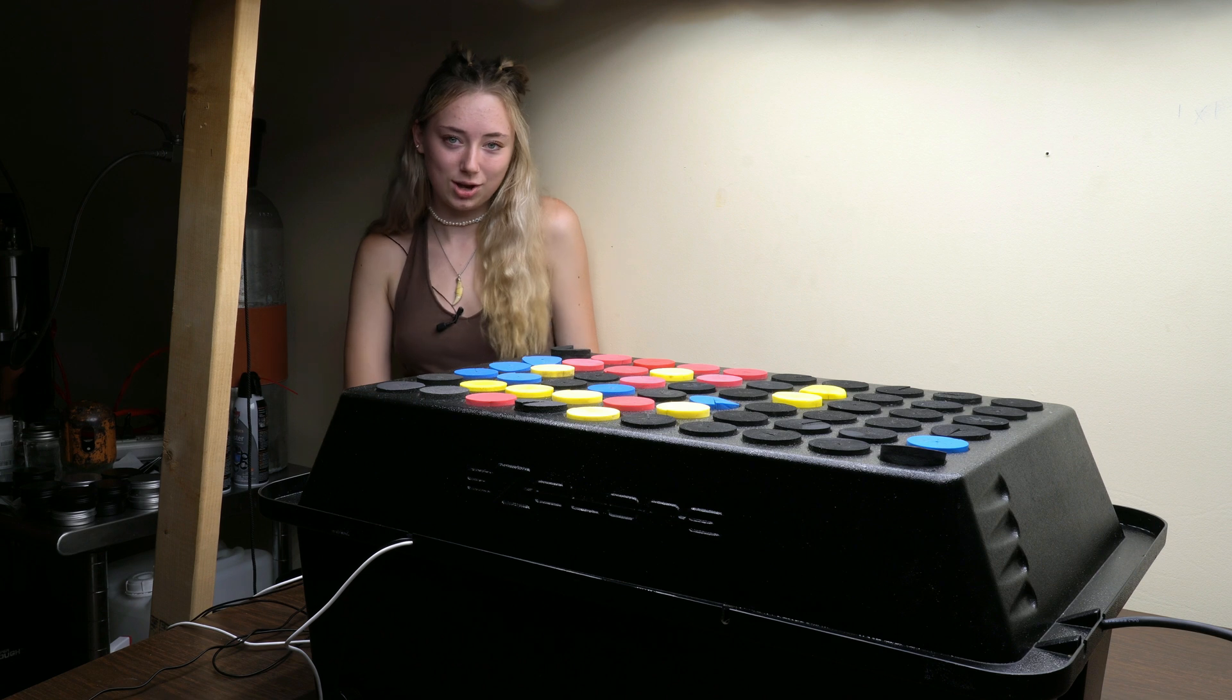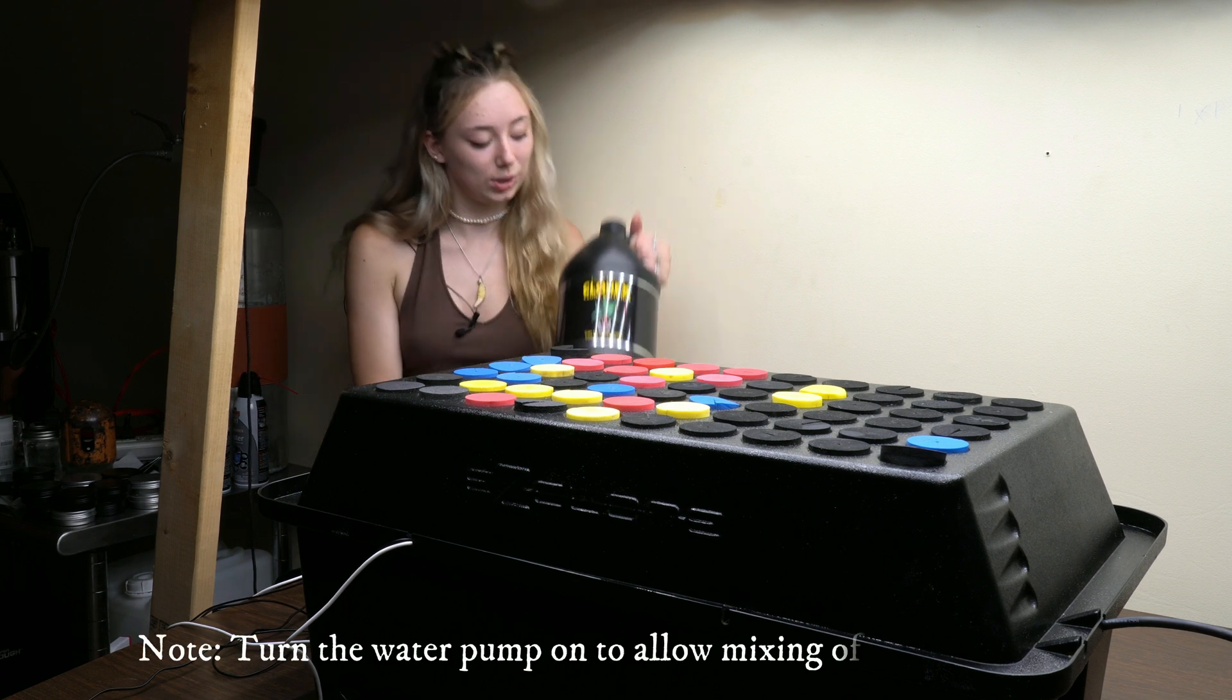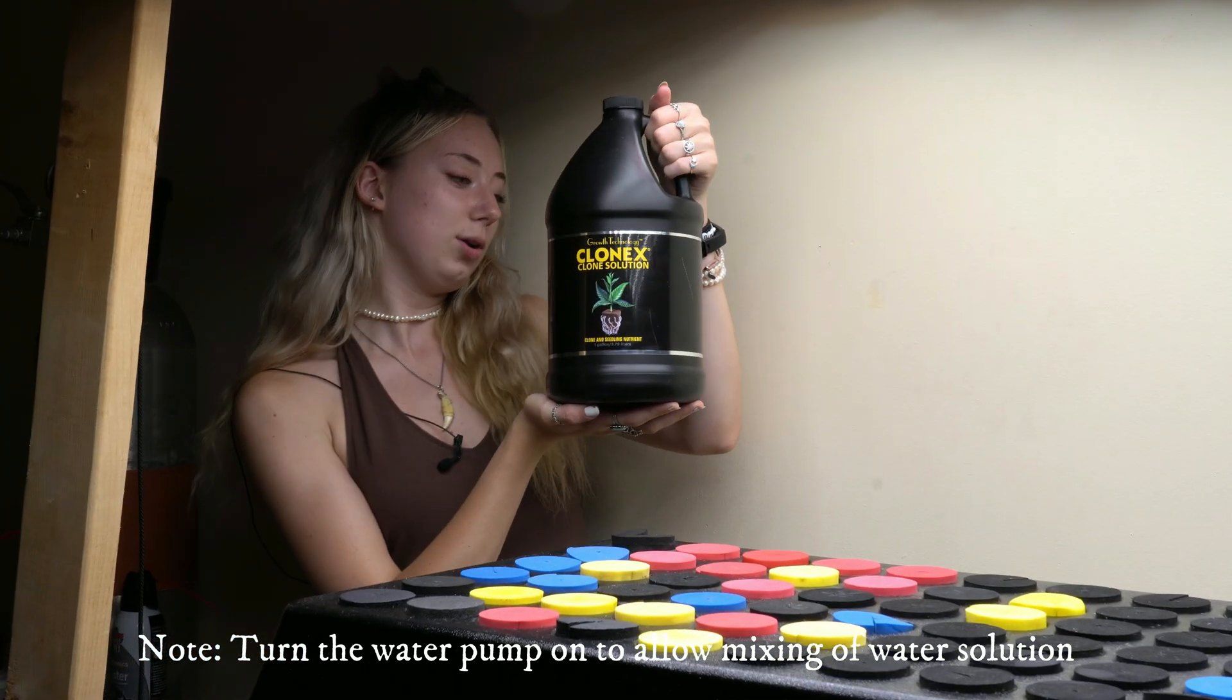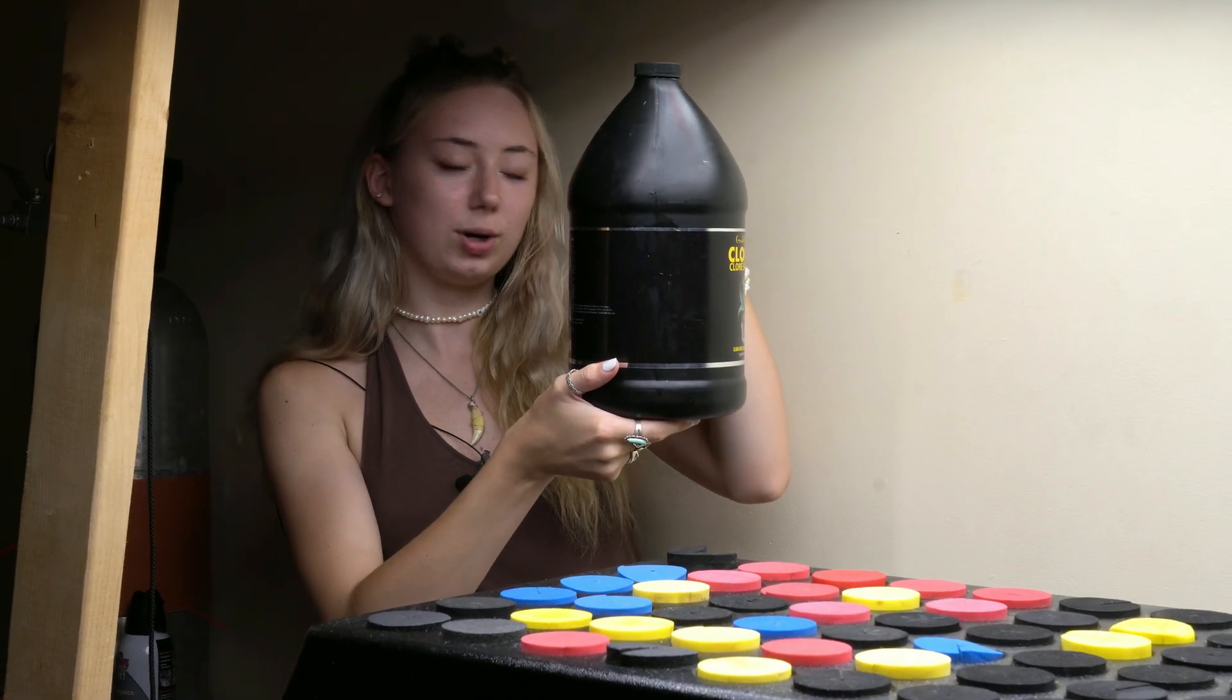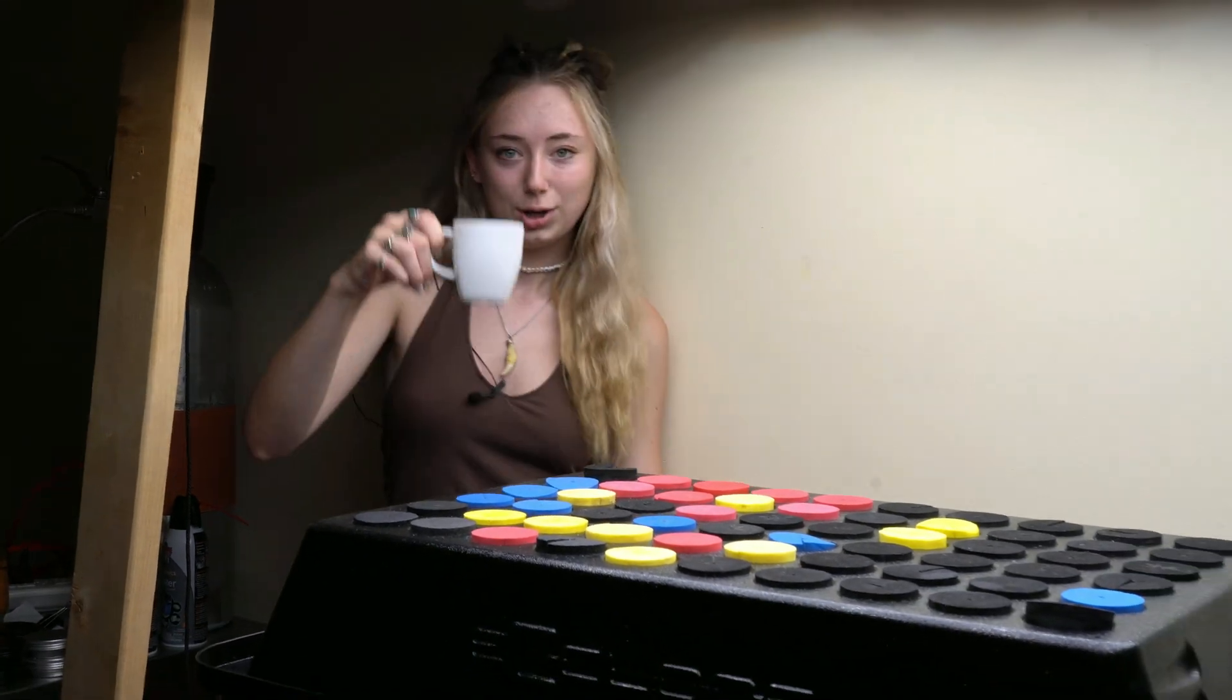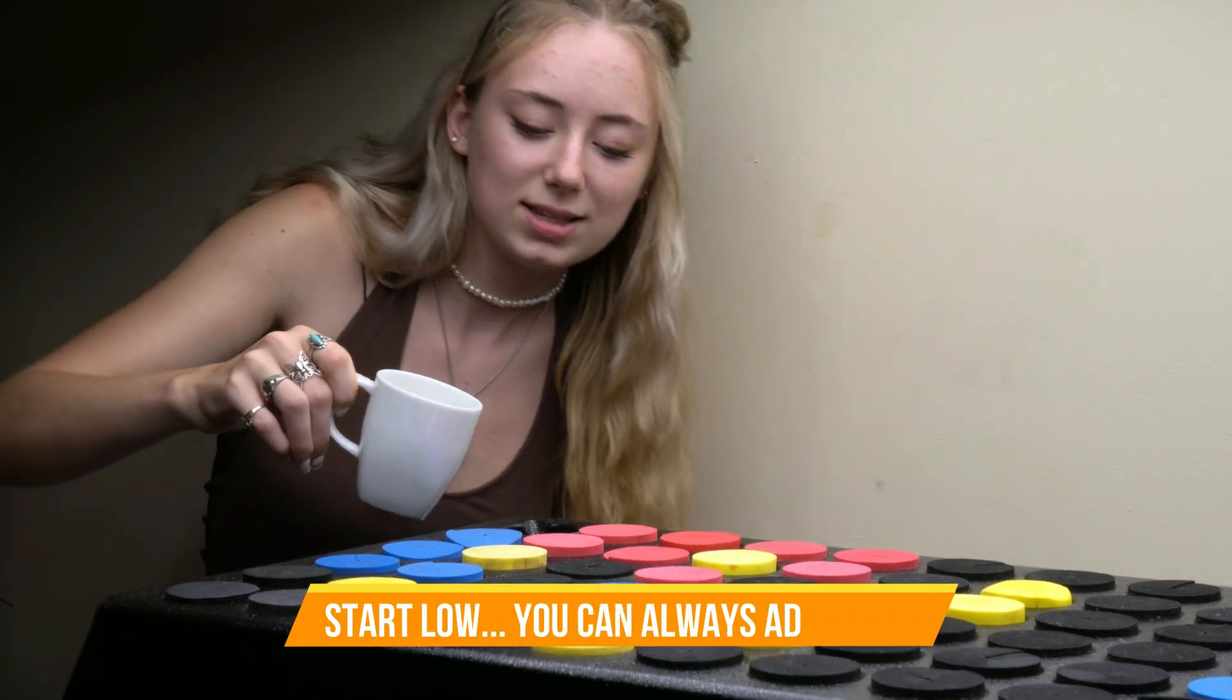So now we need to raise our conductivity levels and lower our pH. So in order to do this, we're going to add our Clone-X clone solution. The bottle recommends adding five to ten milliliters per each liter of water. And so I have my recommended amount pre-ready to go. I'm just going to add that slowly in.